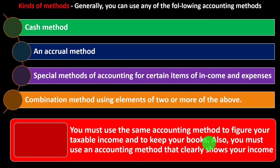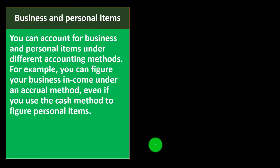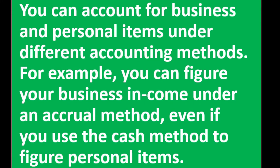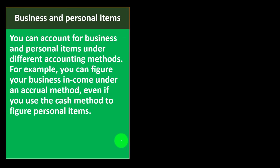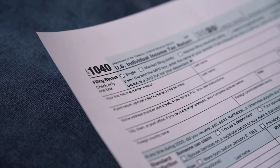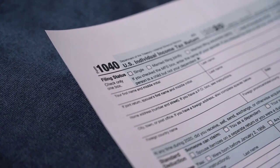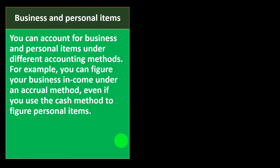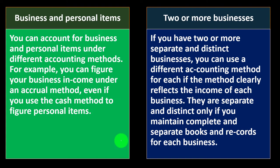You must use an accounting method that clearly shows your income. Business and personal items can be accounted for under different methods. For example, you can figure business income under an accrual method even if you use the cash method for personal items. When filing Form 1040, personal deductions like Schedule A or charitable giving are done on a cash basis — but if your business is on accrual, that's fine, because the business is its own entity with its own method.